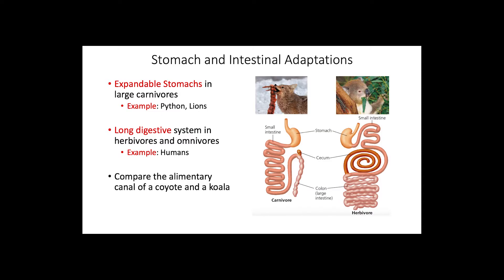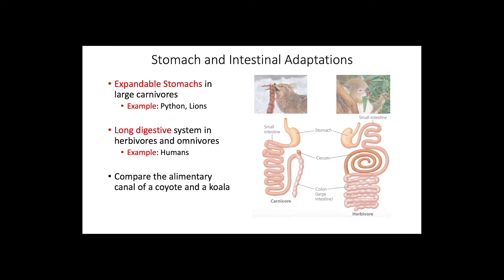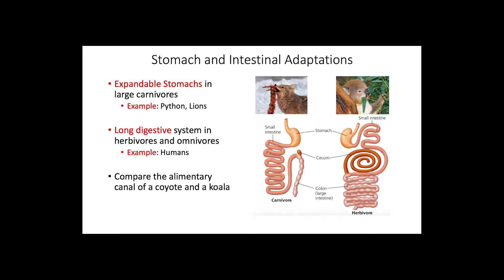If we compare the alimentary canal of a carnivore like a coyote and a herbivore like a koala, we will see that both animals are similar in size, yet the digestive systems are completely different, with the koala presenting much longer intestines adapted to process tough plant material.